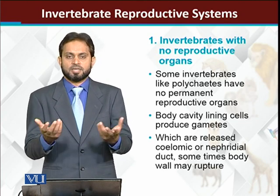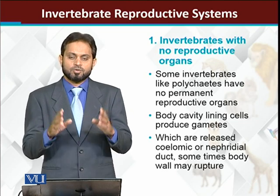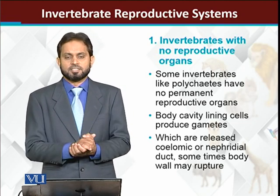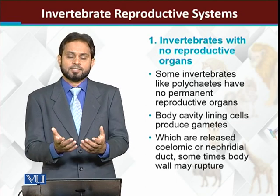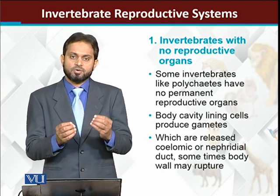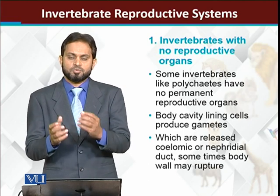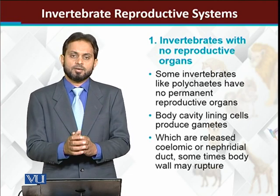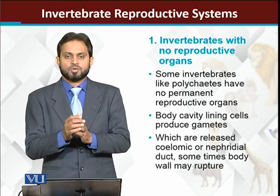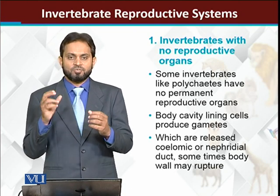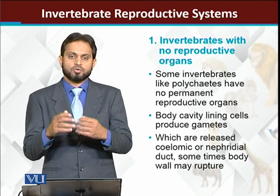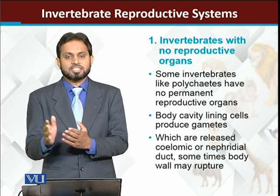During a specific reproduction season, the body cavity lining cells will mature and germinate to produce gametes. These gametes are then released. There are two options: the animal's body wall ruptures and the gametes are released. So polychaetes have no gonads, no reproductive structures, and no transport structures for specific structures.